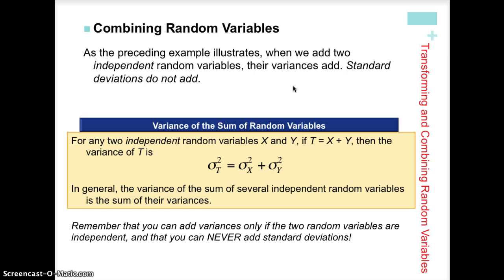You can only add variances if the two random variables are independent. If they're not independent, we cannot combine variances this way. And remember, we don't add standard deviations — only variances. Don't make that mistake; it's a very easy one to make.